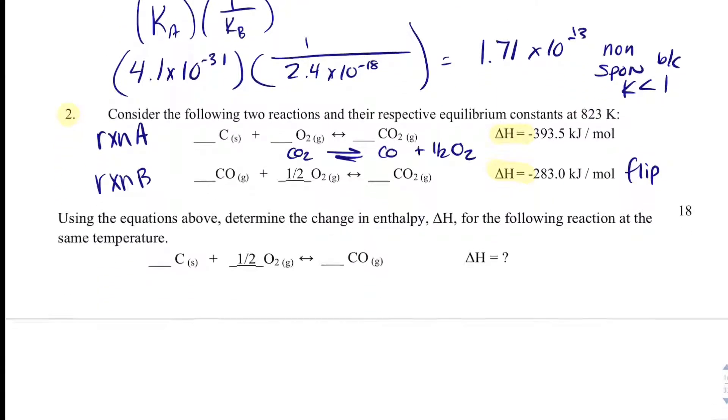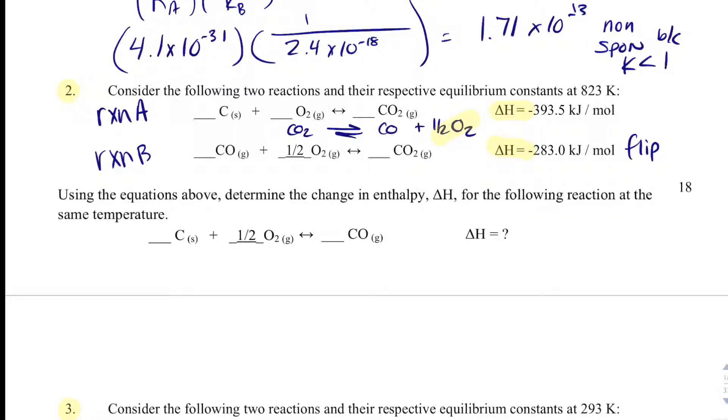That would allow this oxygen to go away and be left with 1.5 O. At the same time, we'd have carbon monoxide, which I want, and then my carbon dioxide actually cancels, and that makes sense because I don't have any carbon dioxide in my overall reaction. Because I'm flipping this, it's not a reciprocal for delta H. This is now positive 283.0.